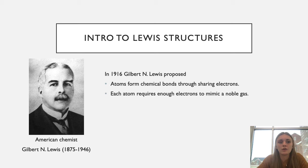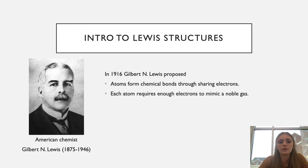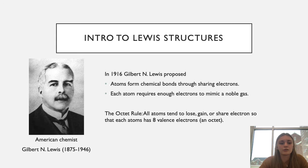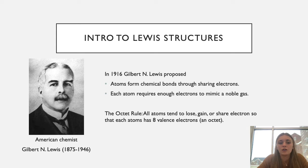Noble gases are very stable atoms in their regular form, so it makes sense that all other atoms would want to mimic their stability to minimize internal energy. This follows what we call the octet rule, which means all atoms tend to lose, gain, or share electrons so that each atom has eight valence electrons — an octet.